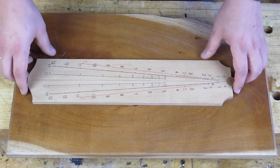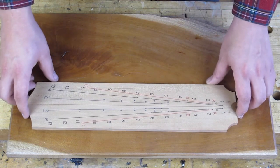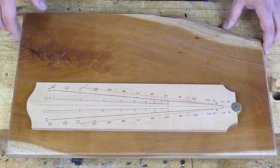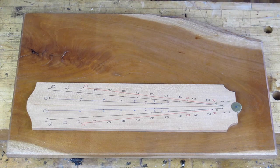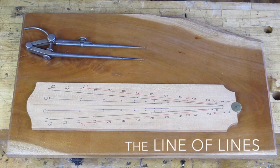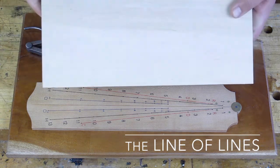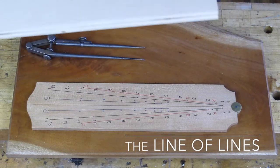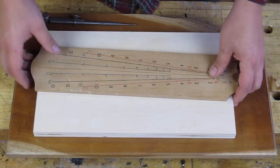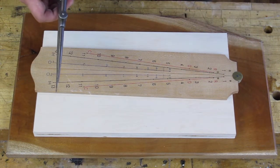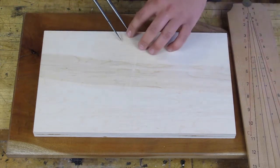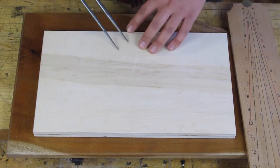So now to start in on the primary use of the tool, which is deriving proportional ratios from physical measurements using a set of dividers. And for that we're going to go to the line of lines.